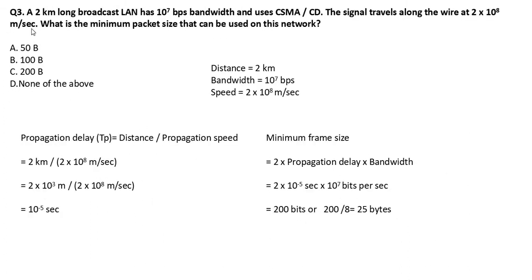Next question: A 2 km long broadcast LAN has 10^7 bits per second bandwidth and uses CSMA/CD. The signal travels along the wire at 2 × 10^8 meters per second. What is the minimum packet size that can be used on this network? Given: distance = 2 km, bandwidth = 10^7 bps, speed = 2 × 10^8 m/s.